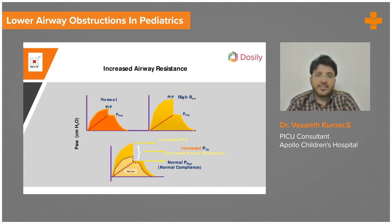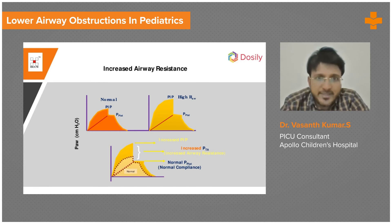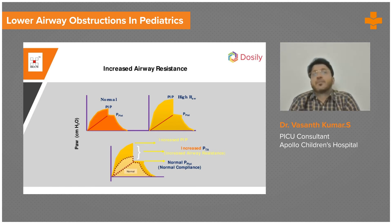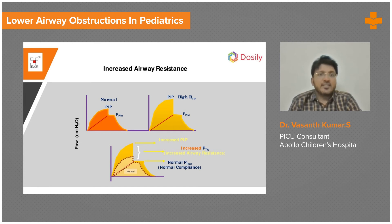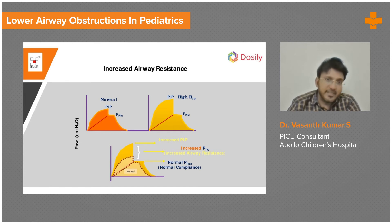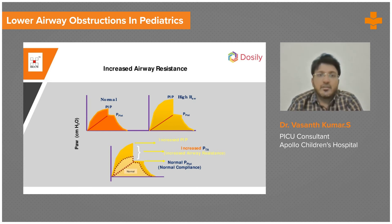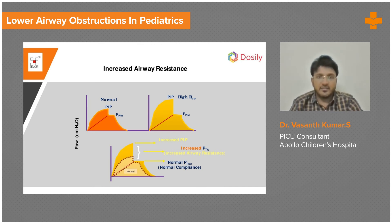The P-plateau pressure graph is important. In the yellow part, PIP is high, but P-plateau is much lower. Unlike ARDS where P-plateau is very high, in asthma the PIP is higher and P-plateau is low. The increase in PIP is due to increased resistance, as the trans-airway pressure is much higher. This is the key difference between ARDS and asthma.